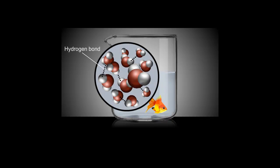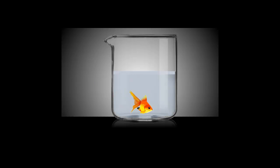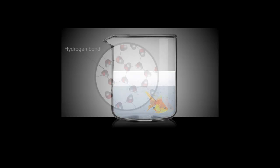In liquid water, these molecules are constantly moving, and the hydrogen bonds break and reform. In ice, since the temperature is lower, the molecules are moving less, and the bonds are stabilized, forming a lattice. The lattice traps air, making ice less dense than water, and making it float.